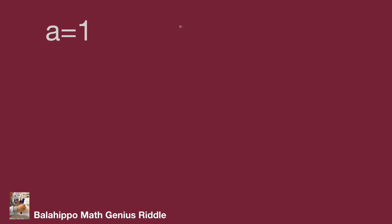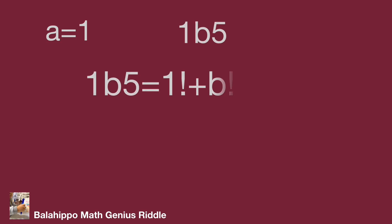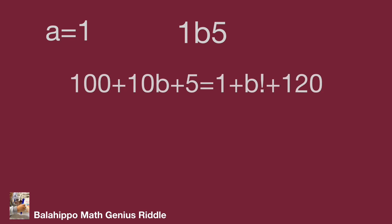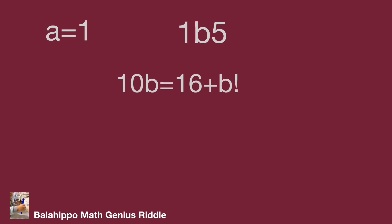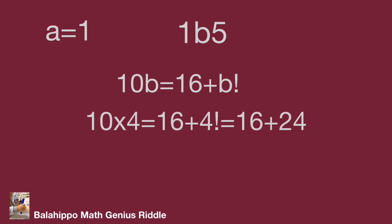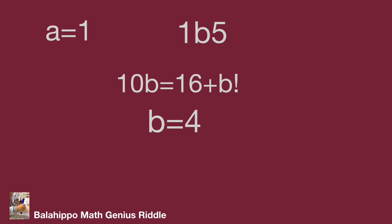Checking the last case, three-digit number 1b5: 1b5 = 1! + b! + 5!, which develops as 100 + 10b + 5 = 1 + b! + 120, simplifying to 10b = 16 + b!. With b = 5, b! = 120 and 10b = 50, so 50 < 120 — does not work. Choosing b = 4: 10 × 4 = 40, and 16 + 4! = 16 + 24 = 40. So b = 4 fits the answer. We can verify b = 3 does not satisfy the requirement. We find the three-digit number is 1, 4, 5.